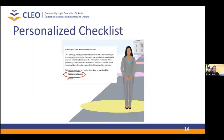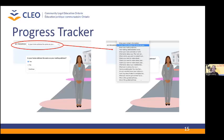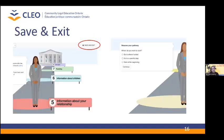Users are also able to save information that is important to them in a personalized checklist. At the end of the pathway, the user can download and save or print their checklist. This downloaded document contains clear and concise legal information on every topic that the user has opted to add to their checklist through the duration of the interview. The progress tracker also makes it easy for the user to keep track of the information that they have entered throughout their interview. An important feature of the pathway is the save and exit function, which allows users to save their information and exit the pathway at any time. Users' information is stored in our secure system hosted at Legal Aid Ontario.